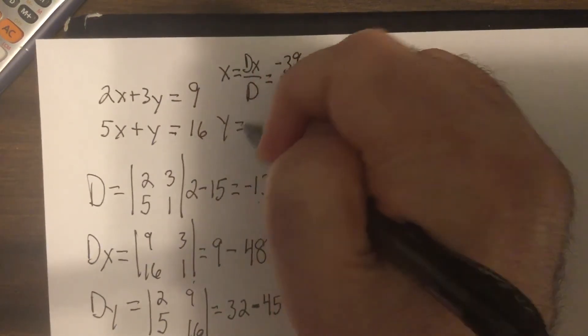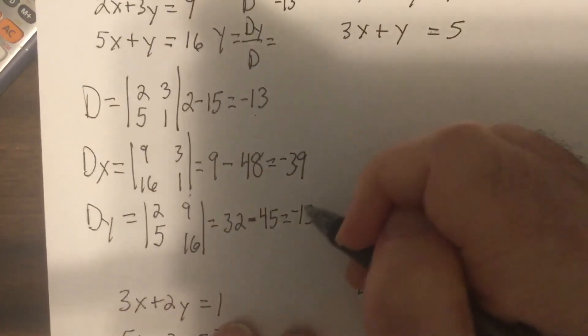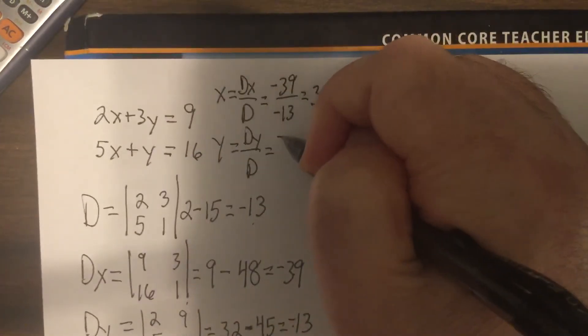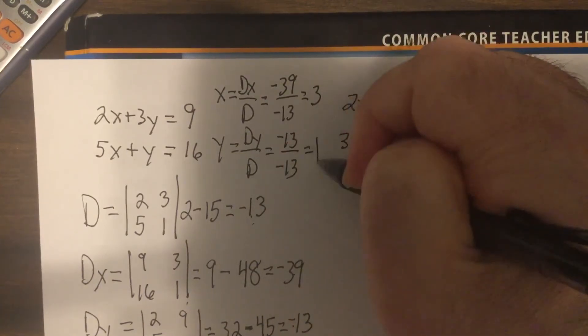Over D, which is negative 13, which is 3. Y is DY divided by D, which is negative 13, divided by negative 13, which is 1.